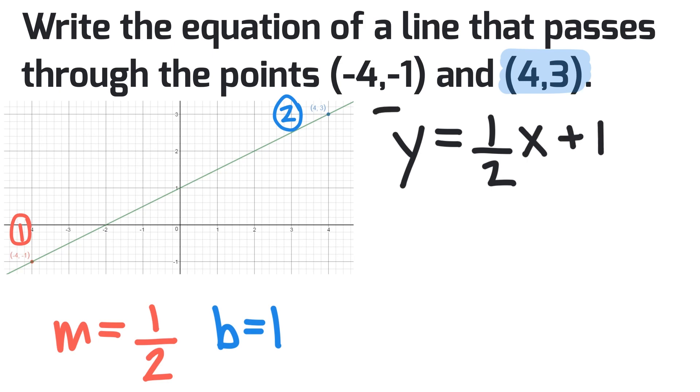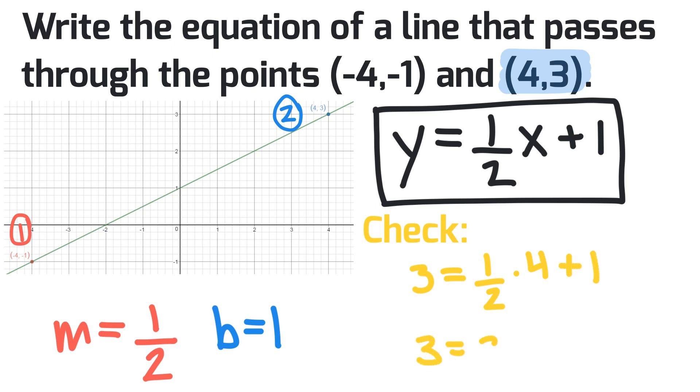In order to make sure that we have the correct equation we must verify or check it. So I'm going to check it below and I'm going to use the coordinate point or ordered pair that I've been given in the question. 3 equals 1 half multiplied by 4 plus 1. 3 equals 2 plus 1. 3 equals 3. So we know this to be true.